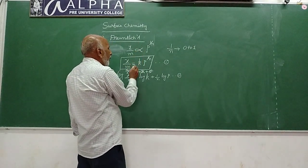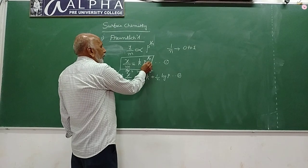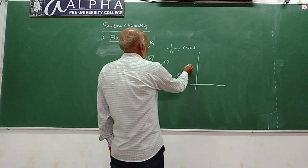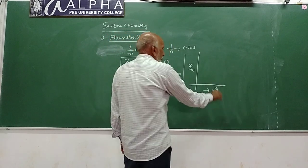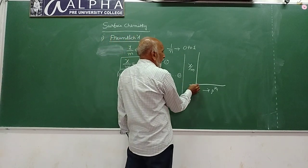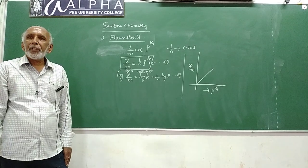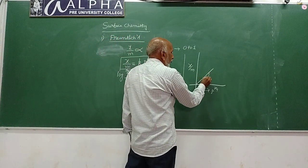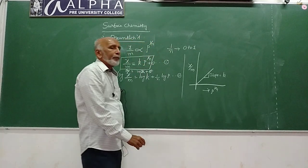The plot of y against x must be a straight line, where the constant c corresponds to zero. So if you plot x by m against p to the power 1/n, it must be a straight line passing through the origin, whose slope is equal to k, the adsorption coefficient.